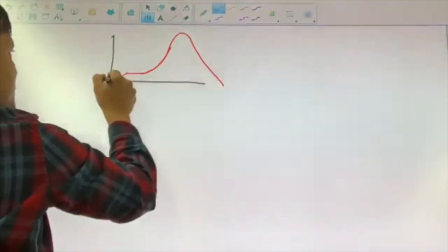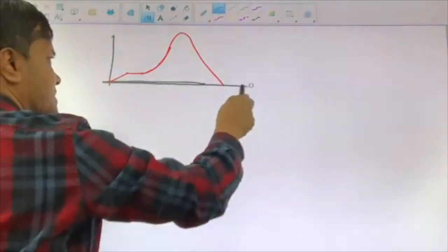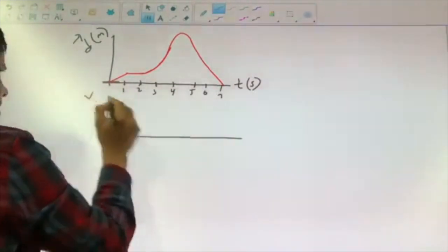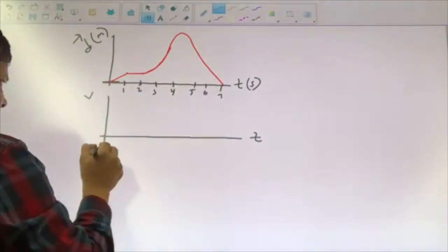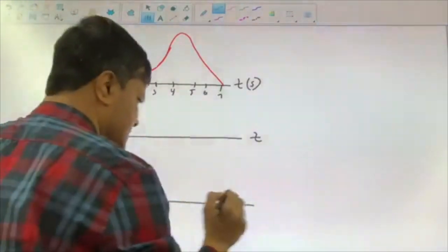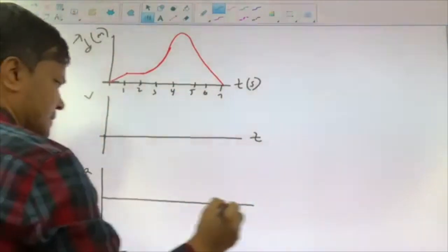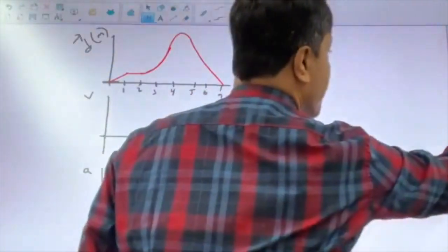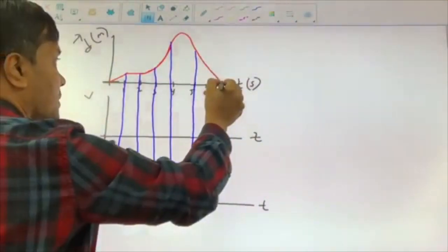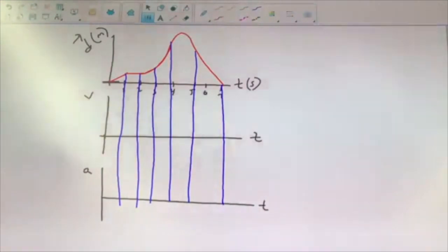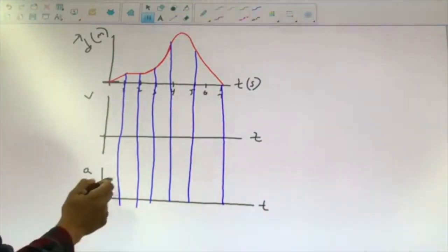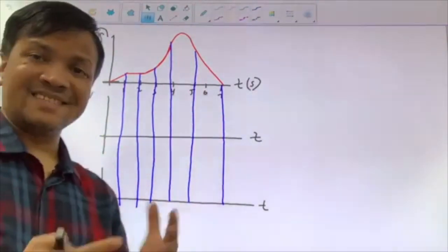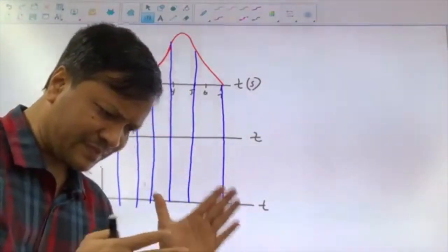Make sure the object returns to the same place. So we have the D-t graph, the V-t graph, and the A-t graph. We can definitely use divide and conquer here. Let us count how many distinct regions we have: 1, 2, 3, 4, 5, 6. We have 6 distinct regions and we are going to convert each and every region separately.